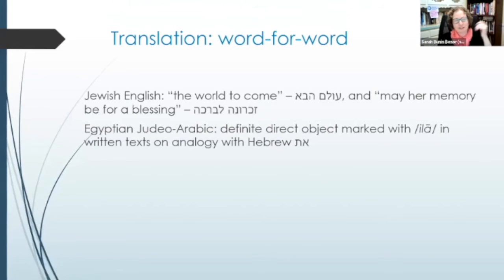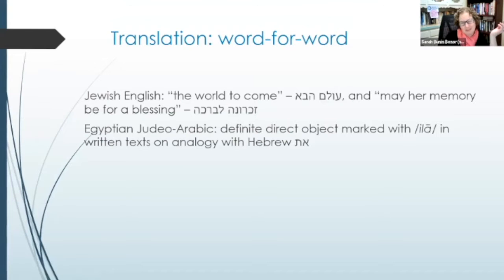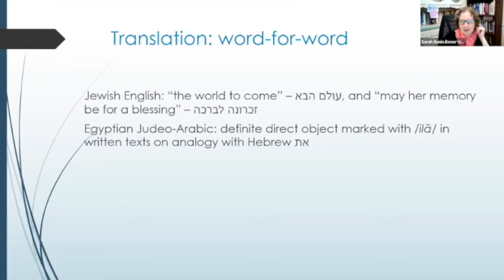Sometimes this word-for-word translation tradition plays out in spoken language as well, not just in actual translations of the text. For example, the English phrase 'the world to come' — 'olam haba' — follows the Hebrew word order rather than the more natural 'the coming world.' Similarly, 'may her memory be for a blessing' sounds unusual to most English speakers but follows the Hebrew 'zichrona livracha.' In Egyptian Judeo-Arabic, a direct object marker on analogy with the Hebrew 'et' — 'ilah' — gets transferred into everyday spoken Judeo-Arabic.